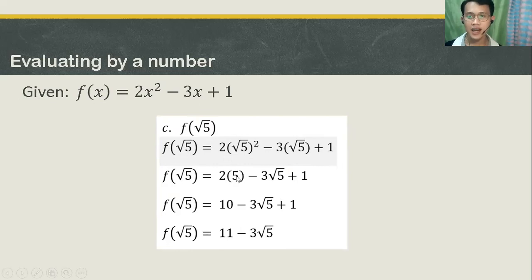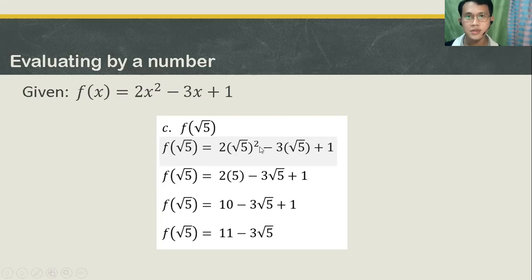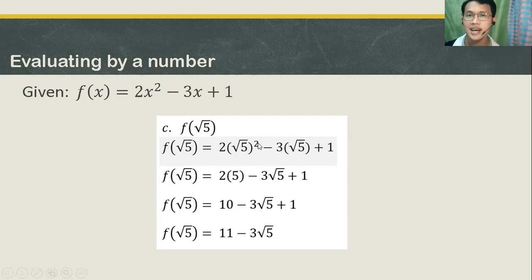2 times 5 — why is the answer 5? It's because the quantity of square root of 5 squared: the square root and the exponent 2 cancel each other. That's why it will turn into 5.